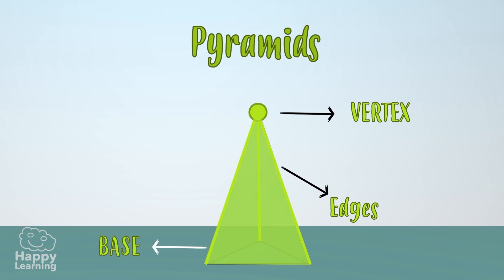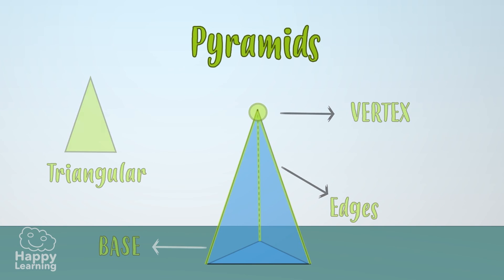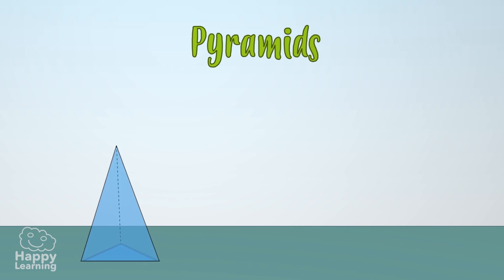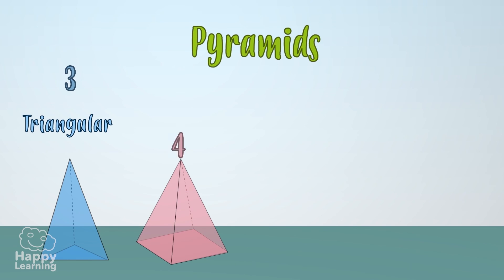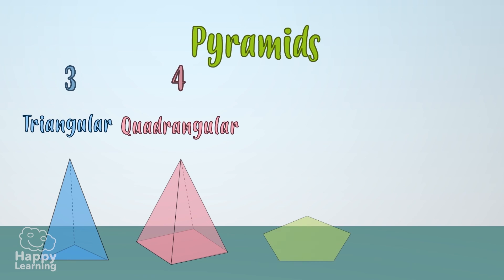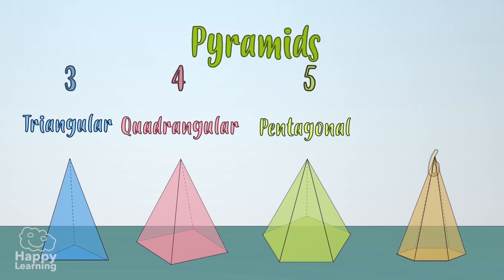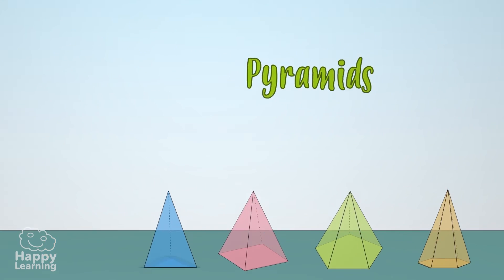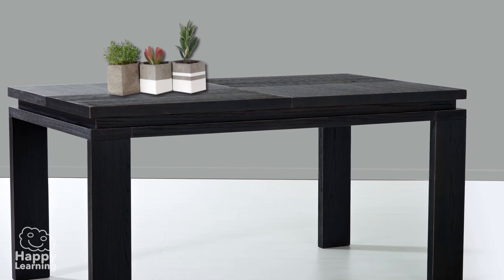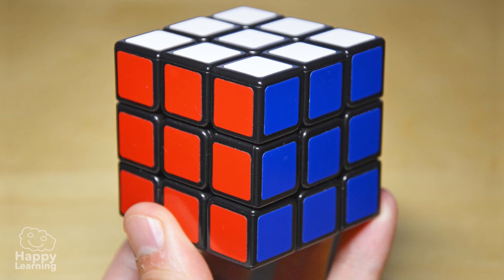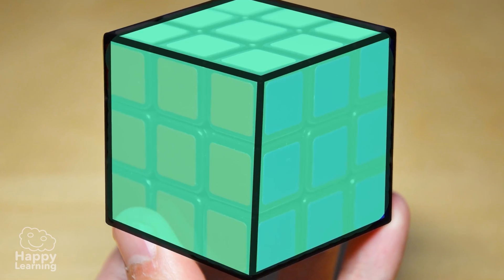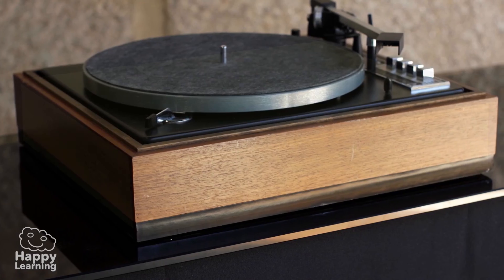Pyramids have a single base and a common vertex where the edges of the lateral faces meet, so the lateral faces will always be triangular. Like prisms, they are named by the number of sides their base has — triangular, quadrangular, pentagonal pyramid, and so on. Polyhedrons have infinite shapes and sizes, and if you look around us, there are many polyhedrons — we are surrounded by them.